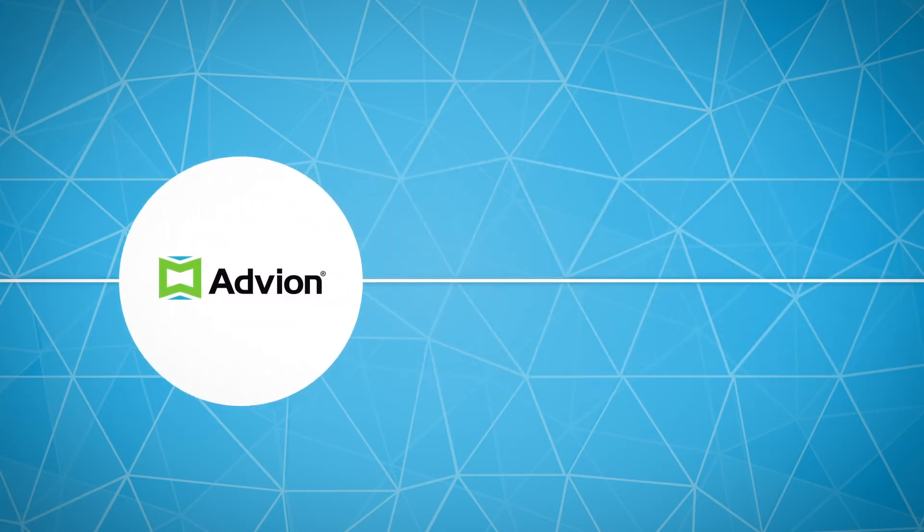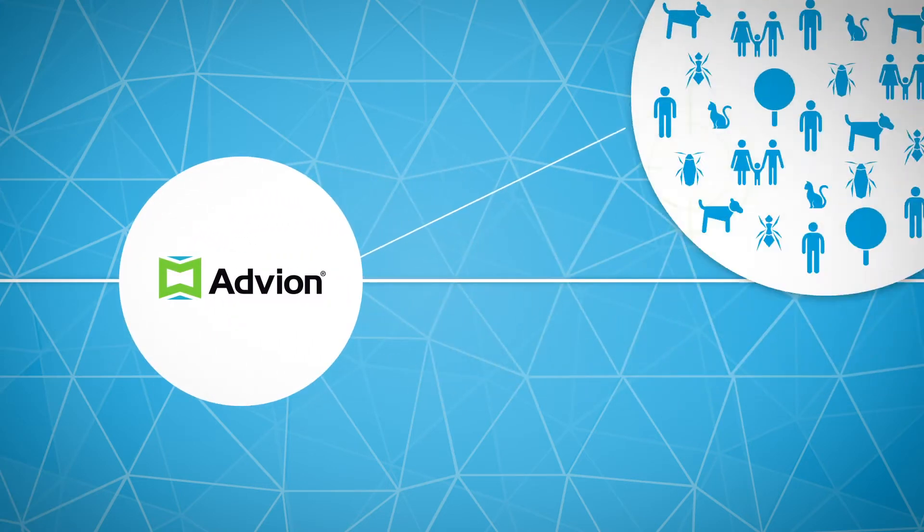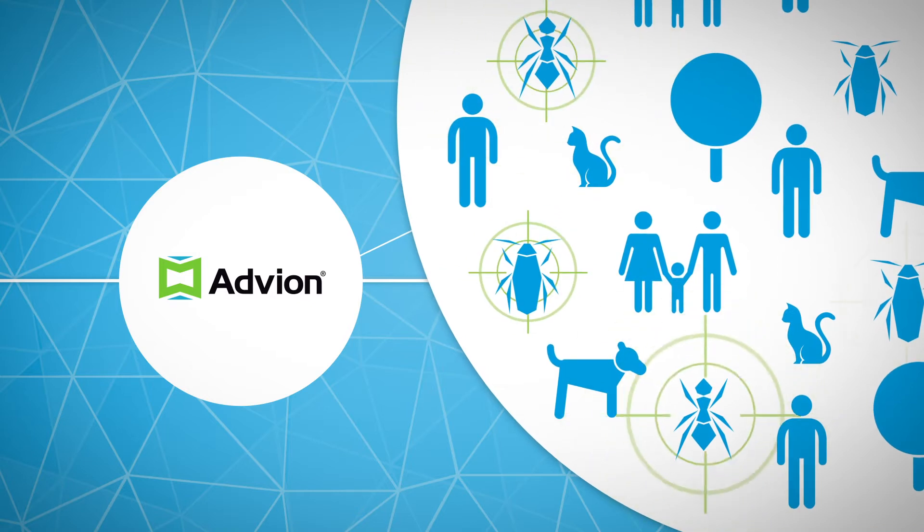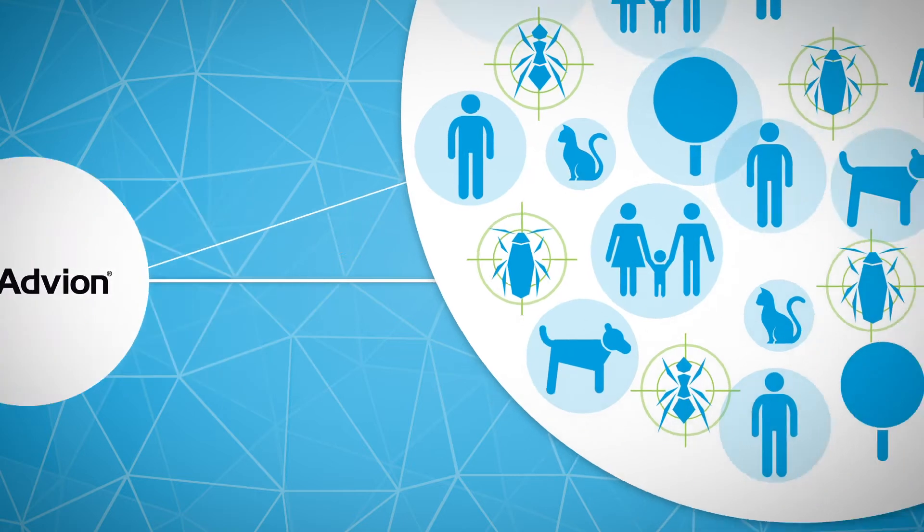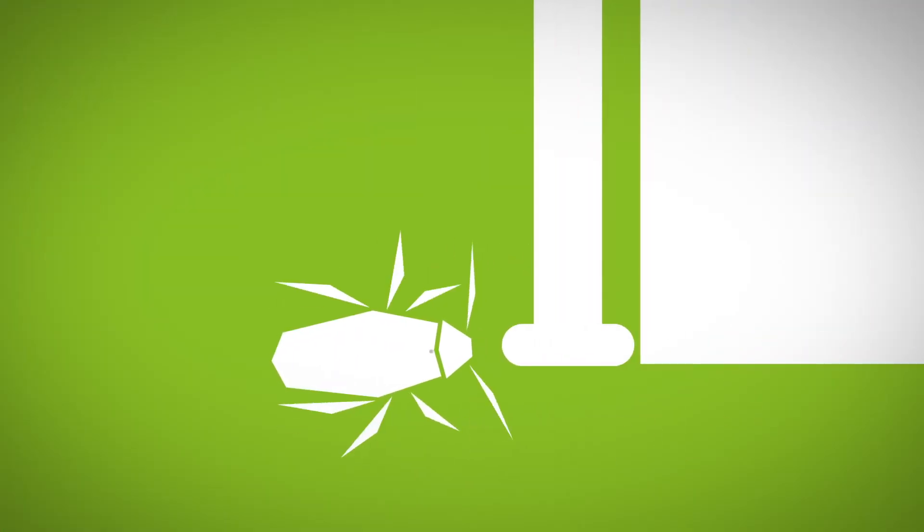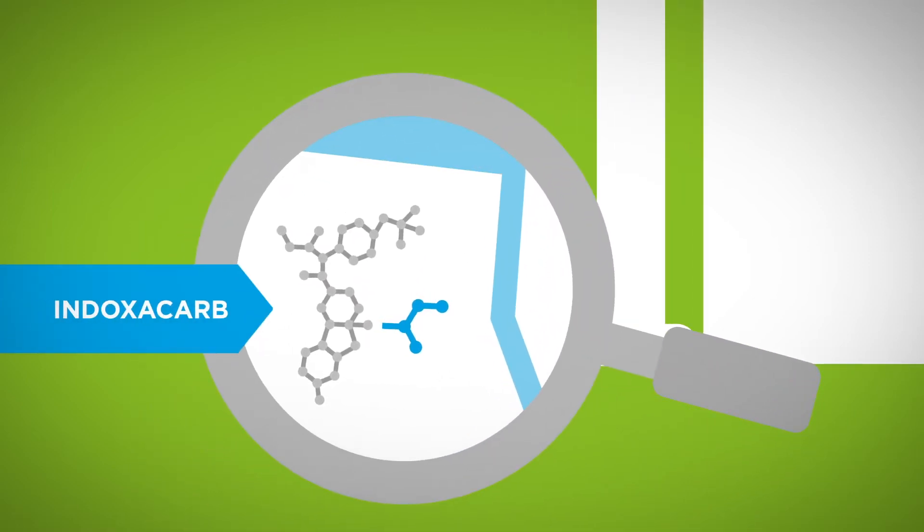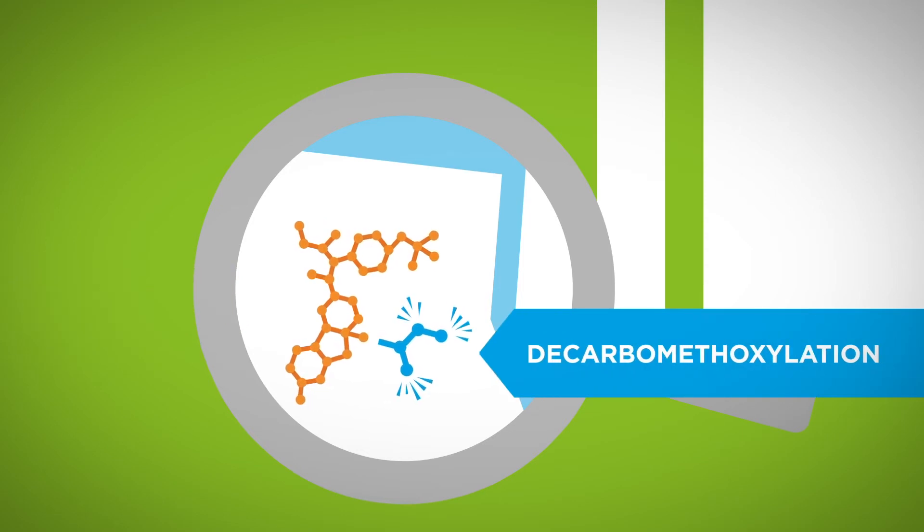Advean brand insecticides from Syngenta can effectively differentiate between target insects and non-target organisms with a meta-active effect. The insects' unique metabolic enzymes process the insecticide to its active form by removing a small part of the molecule through a process called decarbomethoxylation.